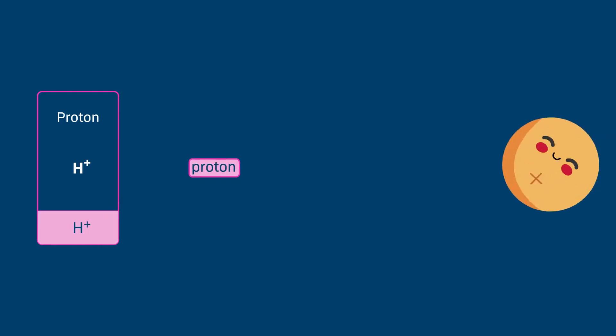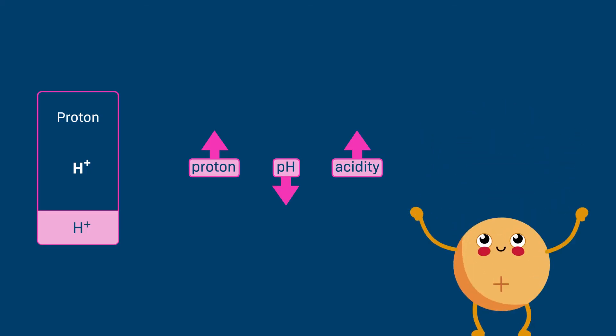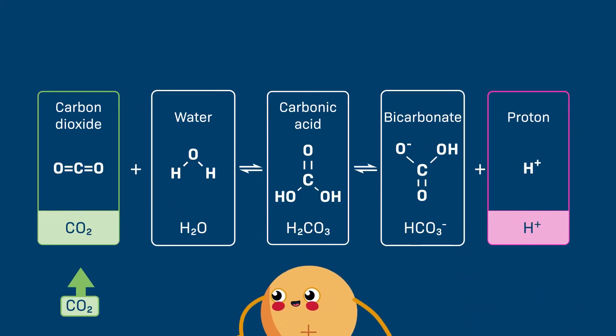pH is a measure of proton concentration. The higher the proton concentration, the lower the pH, and the more acidic a solution is. So, more carbon dioxide in the water results in more protons and a lower pH.